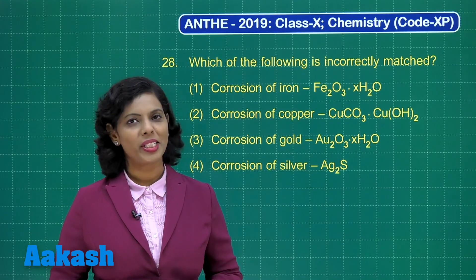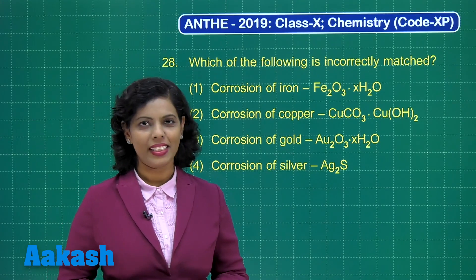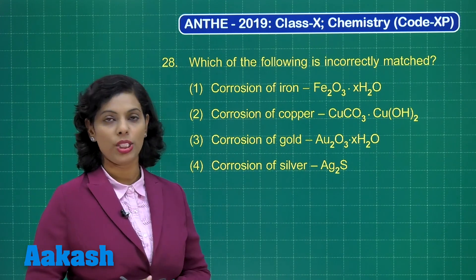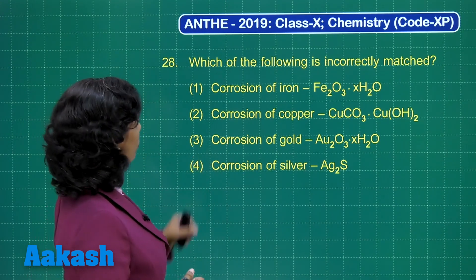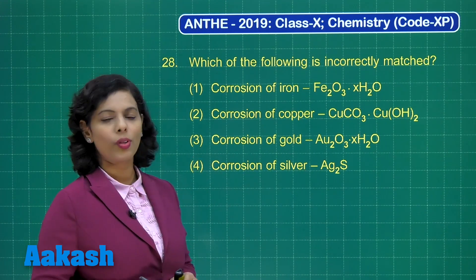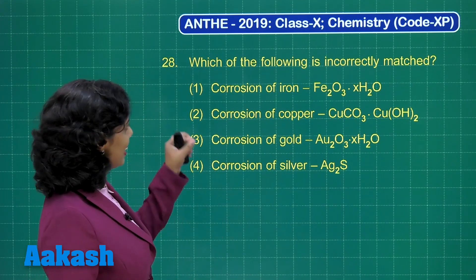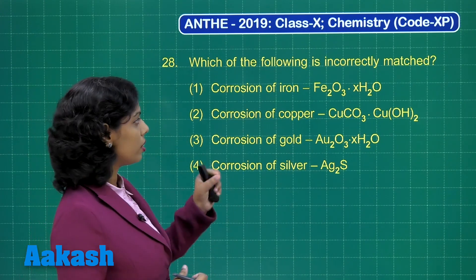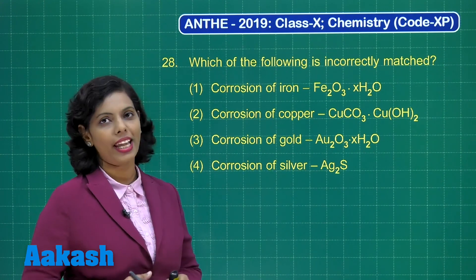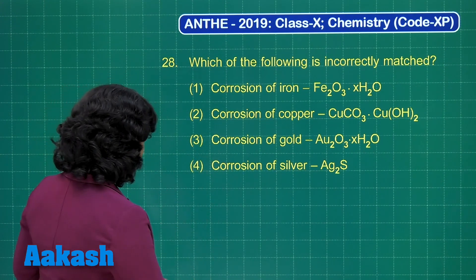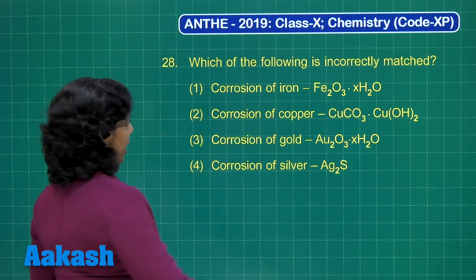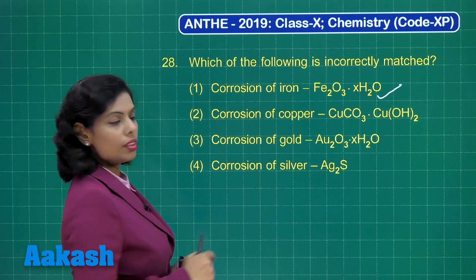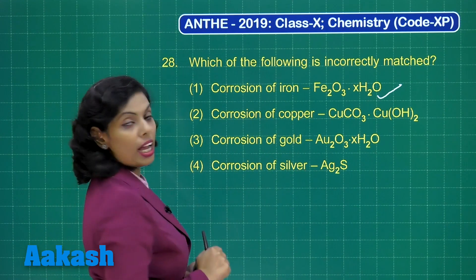Now students, it's time for question number 28. This question states: which of the following is incorrectly matched? Let's have a look. Corrosion of iron — the rusting of iron. In this case, the substance formed after rusting, or the rust, is Fe2O3·xH2O. That is correct and it is correctly matched.